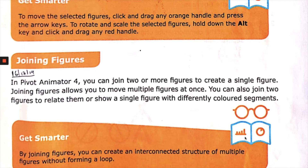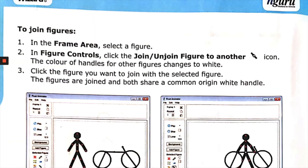Joining figures: In Pivot Animator 4 you can join 2 or more figures to create a single figure. Joining figures allows you to move multiple figures at once, relate them, or show a single figure with differently colored segments. You can create an interconnected structure of multiple figures without forming a loop. To join figures in the frame area, select the figure and in figure controls click the Join or Unjoin Figure to Another icon — the color of the handle changes to white.